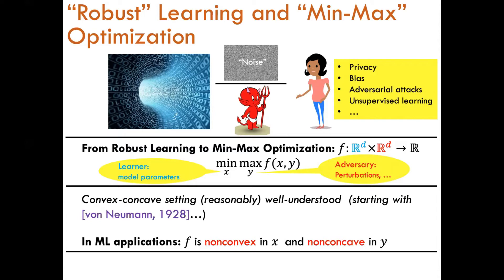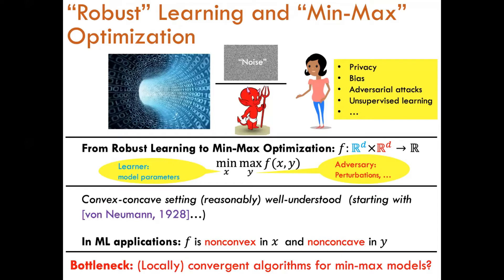However, in machine learning applications, the function f of x, y is oftentimes non-convex and non-concave in both x and y. This allows for more powerful models — for instance, enabling unsupervised learning models such as GANs to learn more complicated distributions from the data. In general, we cannot expect to find a global solution to the min-max problem, since min-max optimization includes non-convex minimization as a special case. The question that arises is whether we can instead find algorithms which converge to some kind of local optimum for the min-max problem.